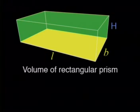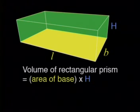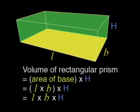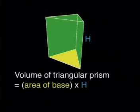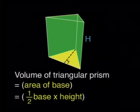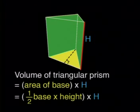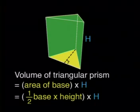The volume of a right rectangular prism was easy to calculate. The area of the base is length times breadth. We then multiplied the area of the base by the perpendicular height H to get L times B times H. We also worked out the volume of a triangular prism. The area of the base is half base times height, and we multiplied this by the perpendicular height H to get half base times height times H.